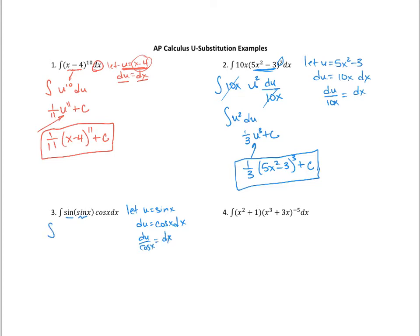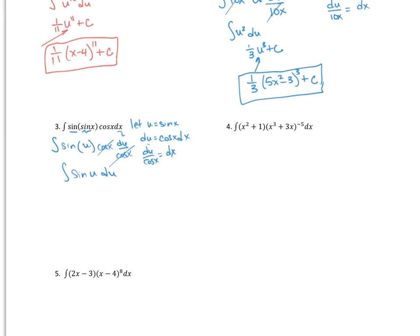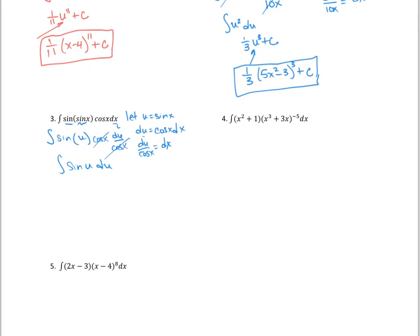Making our substitutions: the integral has sine of u, the cosine x is still present, and dx becomes du over cosine x. Those cosine x terms reduce out, leaving the integral of sine u du. The whole idea of substitution is that things reduce to make the problem easier to integrate. Integrating gives negative cosine u plus c, and resubstituting gives negative cosine of sine of x plus c as our final answer.